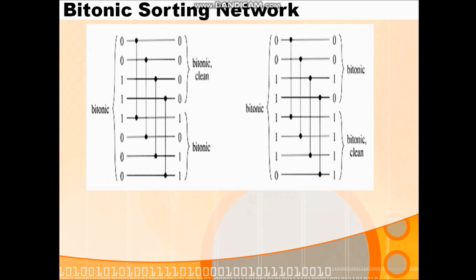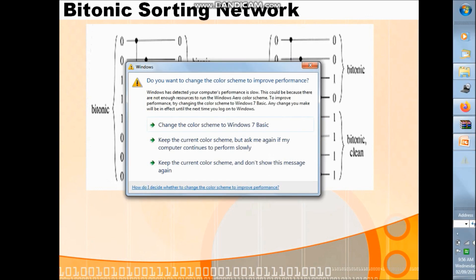When a bitonic sequence of zeros and ones is applied as input to the half cleaner, the half cleaner produces an output where smaller values are in the top half and larger values are in the bottom half, and both halves are bitonic. Here, 8 elements — 0, 0, 1, 1, 1, 0, 0, 0 — are applied to the half cleaner. We divide by 2: first 4 elements (0,0,1,1) form the first half and last 4 elements (1,0,0,0) form the second half.